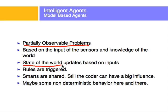Rules are triggered after the model-based agent estimates the environment state. The smarts are shared — the coder can heavily influence the rules, but there's a lot of intelligence in the agent's ability to estimate the state of the world from limited inputs. The agent may also exhibit non-deterministic behavior, meaning that given the same input it is not guaranteed to do the same thing every time.